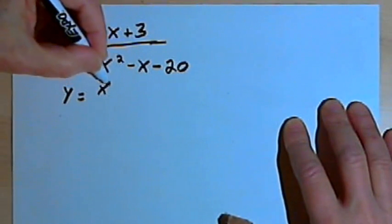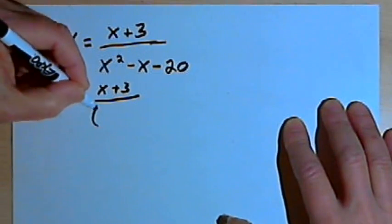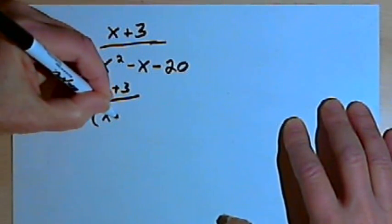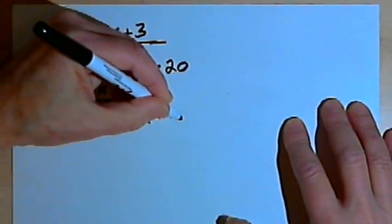So let's turn this into x plus 3 over the factored denominator x minus 5 times x plus 4.